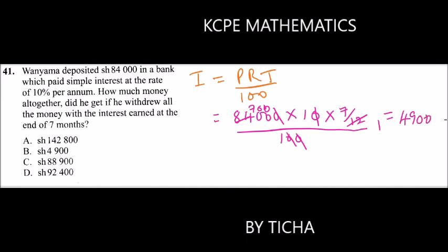Now add the interest to the principle - that's the money he had deposited. You add 84,000 to 4,900, the interest, and you'll get 88,900. That's the amount of money he got after withdrawing the money. Check the answer - it is C.